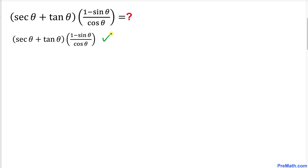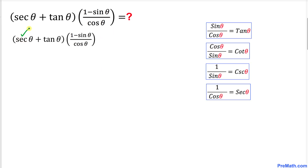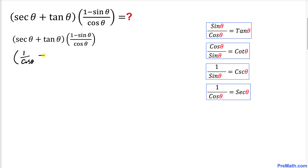I have copied down the left-hand side as you can see. Now let's focus on secant θ. From the given trigonometric table we can see that secant θ is the same as 1 over cosine θ, and likewise tangent θ can be written as sine θ divided by cosine θ. So I can write secant θ as 1 over cosine θ, plus tangent θ as sine θ divided by cosine θ.